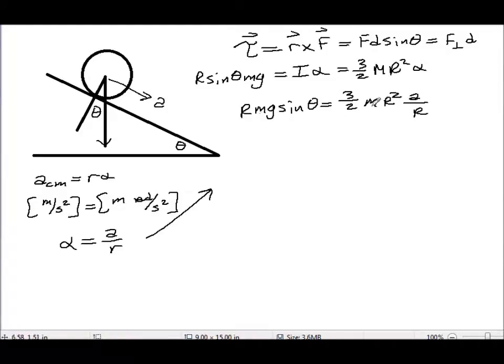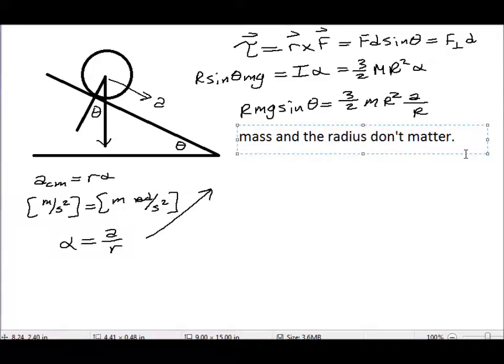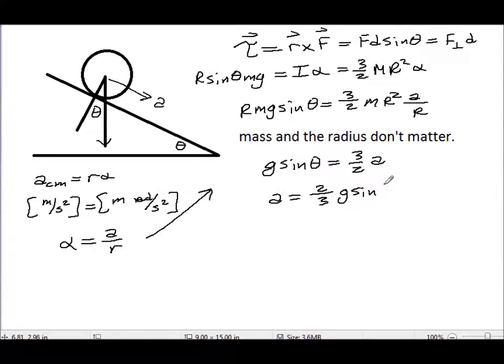Now let's look. We have an m here and an m here. The m's cancel. One r cancels here, another r cancels here. So this gives us something rather important. The mass and the radius don't matter. This is why if you were in the lab, you should have seen that all disks went faster than all hoops and all spheres went faster than all disks. So I get g sine theta equals three halves a, so my acceleration down the ramp is two thirds g sine theta.